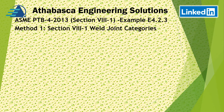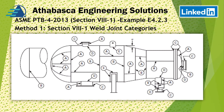We're going to continue with Method 1 and look at Category D, which is defined in Section 8, Division 1. These categories are identical in Division 2 as well. When you're stuck on Division 1, take a look at Division 2 — it's sometimes written a little more clearly. The rules are the same for both regarding the types of categories.